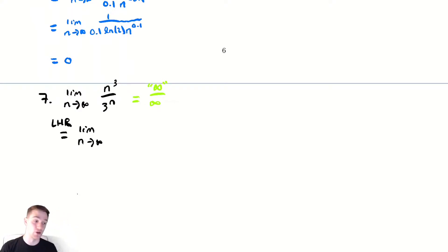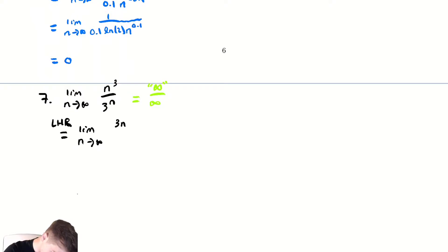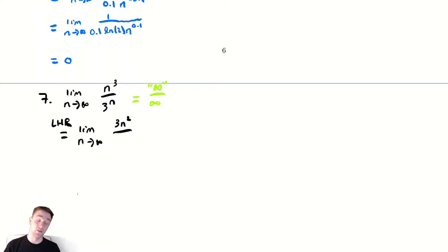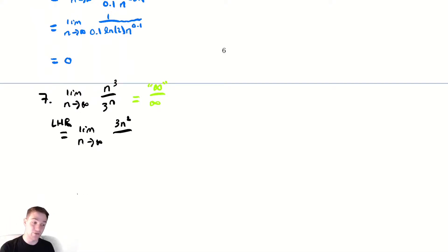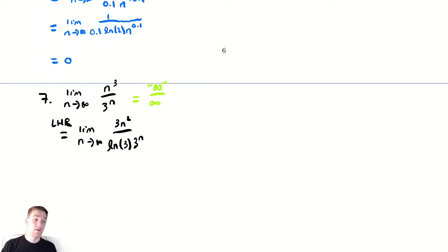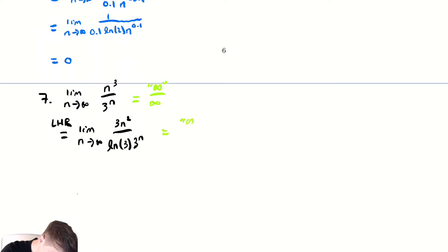We take the derivative of the numerator n cubed, which gives us 3n squared. For the denominator, since e to the x is our favorite function, but here we have a non-natural base, we need to be careful. The derivative of 3 to the n gives us an additional factor of ln of 3. We evaluate the limit and again get infinity over infinity.